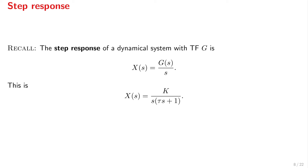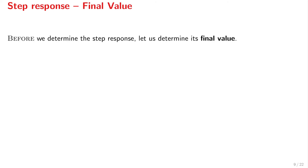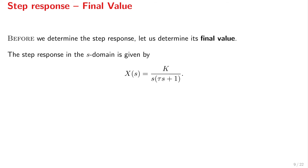Let's now look at the step response, which is a little more interesting. The step response is the response of a dynamical system when the input is a Heaviside function — equivalently, when the input is constant and equal to 1 for all positive times. Then X(s), the step response in the S domain, is G(s) over s, which for a first-order system is K over s times (tau s plus 1). The poles of this X(s) are 0 and minus 1 over tau. Since we have only non-positive-real-part poles, we are allowed to apply the final value theorem.